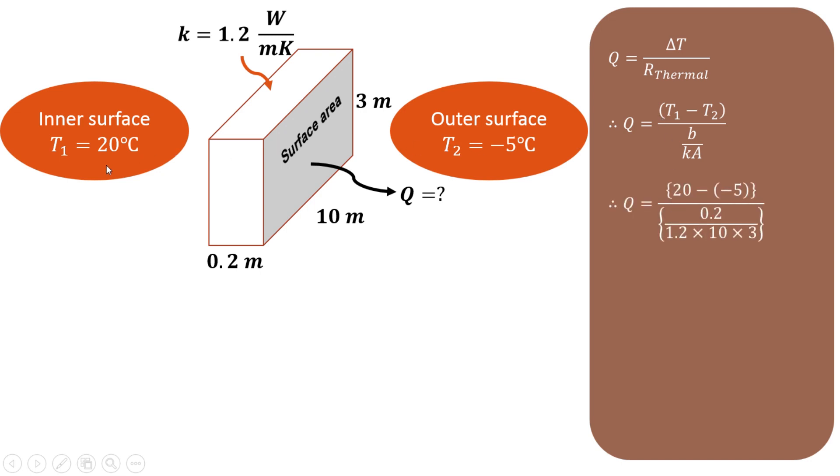T₁ is given as 20, and T₂ is -5, so minus minus becomes plus. The width of this slab is 0.2 meters. Thermal conductivity is 1.2, and the area through which heat transfer takes place is 10 × 3 = 30 m².